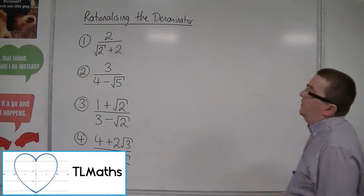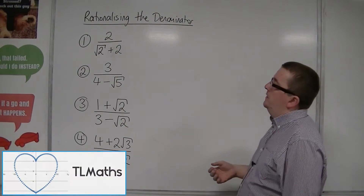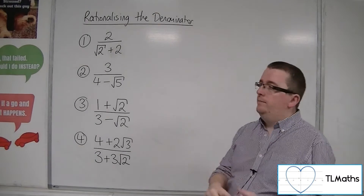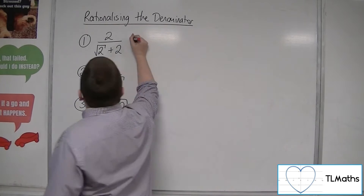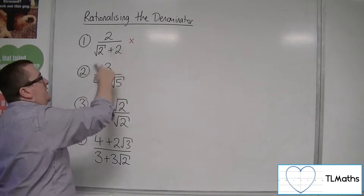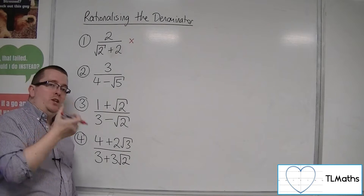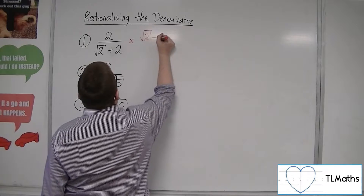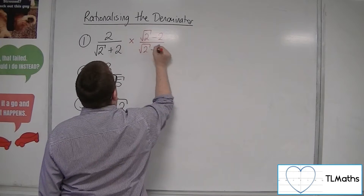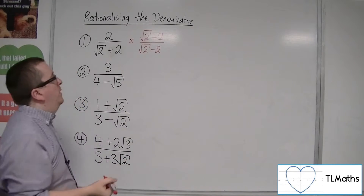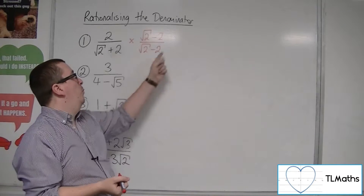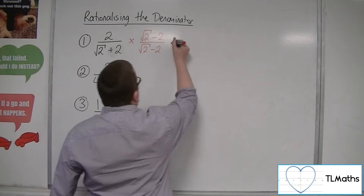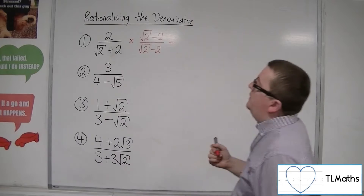Let's look at these examples of rationalising the denominator. For number 1 we've got 2 over root 2 plus 2. It doesn't matter in which order the terms in the denominator are — you just need to change the sign in the middle. So we're going to have root 2 minus 2 over root 2 minus 2 when we multiply through. We're multiplying through by 1, remember — we're not changing the size of the fraction, and we're looking for a cancellation of the surds in the denominator.